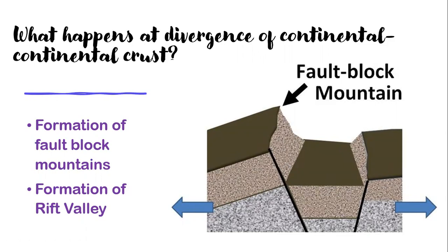How are fault block mountains formed? When two plates move far apart, tension is created between the plates. The earth's crust feels the tension because it is being pushed from both sides. This stress creates fault lines inside the earth's crust. Once the earth's crust has these fault lines, some blocks rise and some go a little bit down. This rise and sinking of blocks results in the creation of fault block mountains. Whenever we have divergence of continental crust, we have formation of fault block mountains.